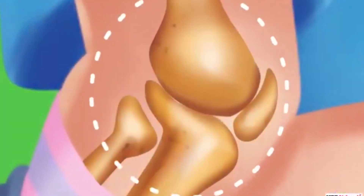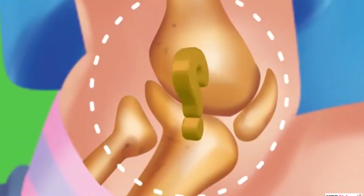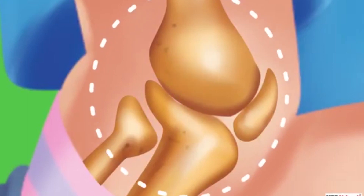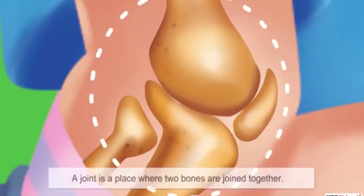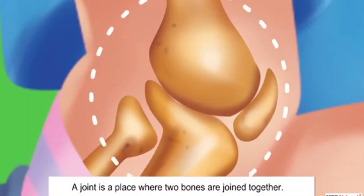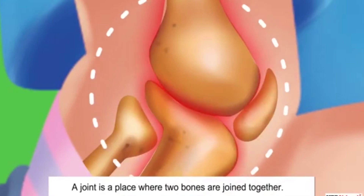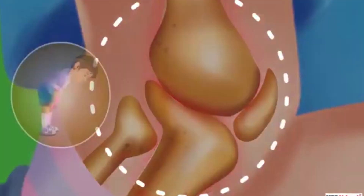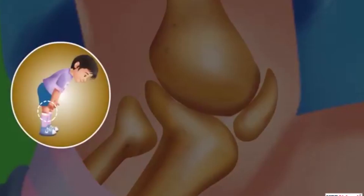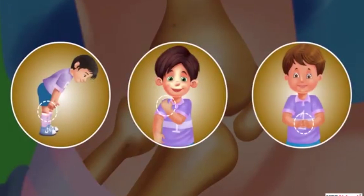Such flexibility in our body is due to the presence of joints. Do you know what a joint is? A joint is a place where two bones are joined together. Press your hand against your knee, your shoulder, or your fingers — you can feel your joints.